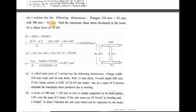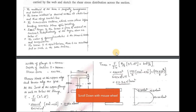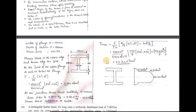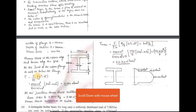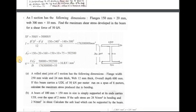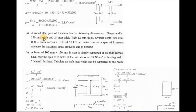Next question: an I-section has flanges 150 mm × 20 mm and a web 300 mm × 10 mm. Find the maximum shear stress developed in the beam for a shear force of 50 kN. Use the formula τ_max = F / (I·b) × [B(D² − d²)/8 + b·d²/8] and substitute the values to get the solution.